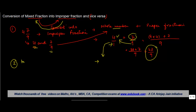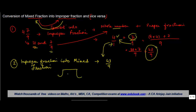Now let us see how to convert an improper fraction into a mixed fraction. Let us take 43 by 9. Whenever you have to convert an improper fraction into a mixed fraction, divide the numerator by the denominator. So we divide 43 by 9: 9 times 4 is 36, and the remainder is 7.